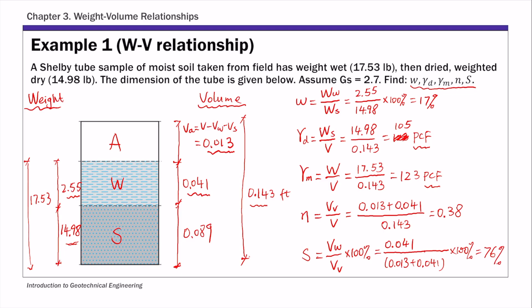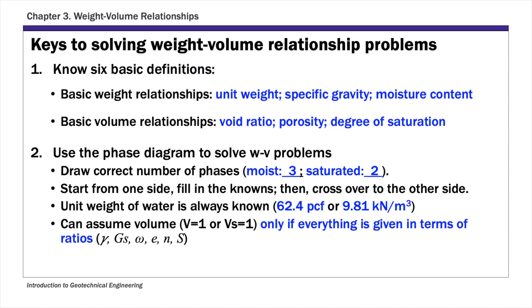That's example one - weight-volume relationships. The key is to fill out the phase diagram with all the weight and volume information. Then all the other calculations are just one of the six basic definitions.